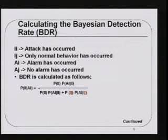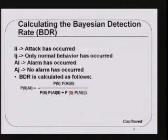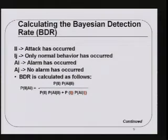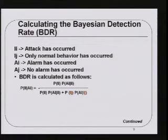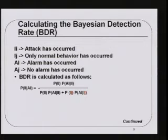The bad news is that very few tools achieve Bayesian detection rates of about 0.80, which is kind of the upper limit. Some of the worst tools score about 0.47 — for instance, SRI's Emerald tool scores about 0.47. If you use Snort without tuning it or removing old signatures from its library, you'll end up with a lower rate. Most commercial tools score somewhere between 0.60 and 0.80.